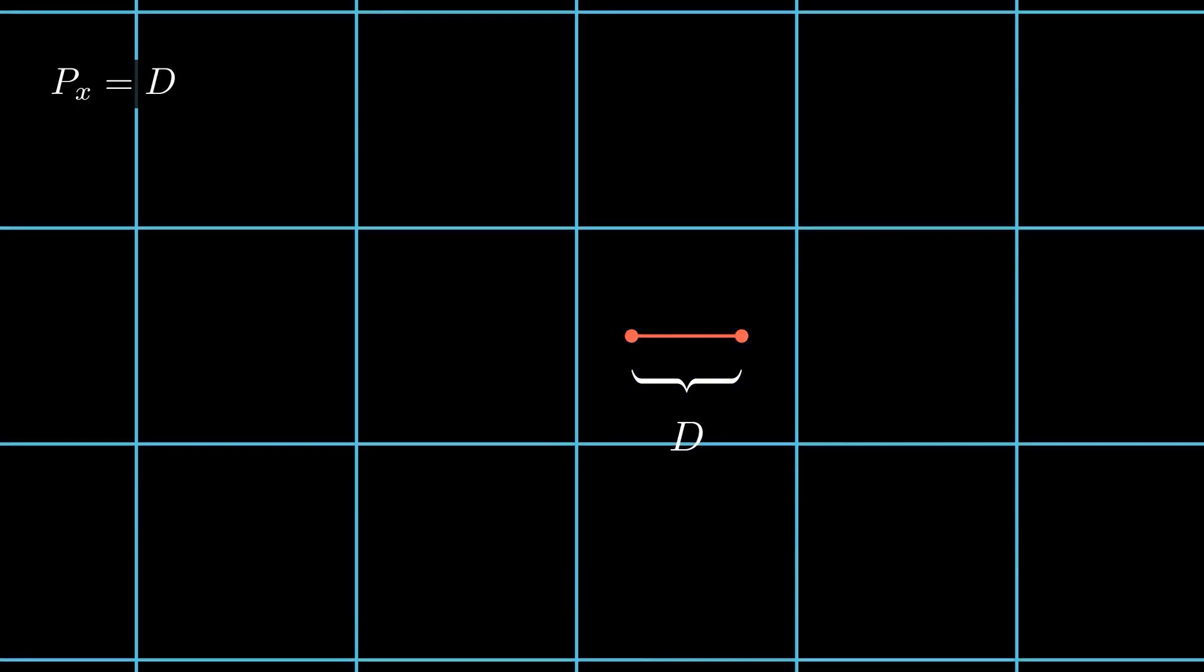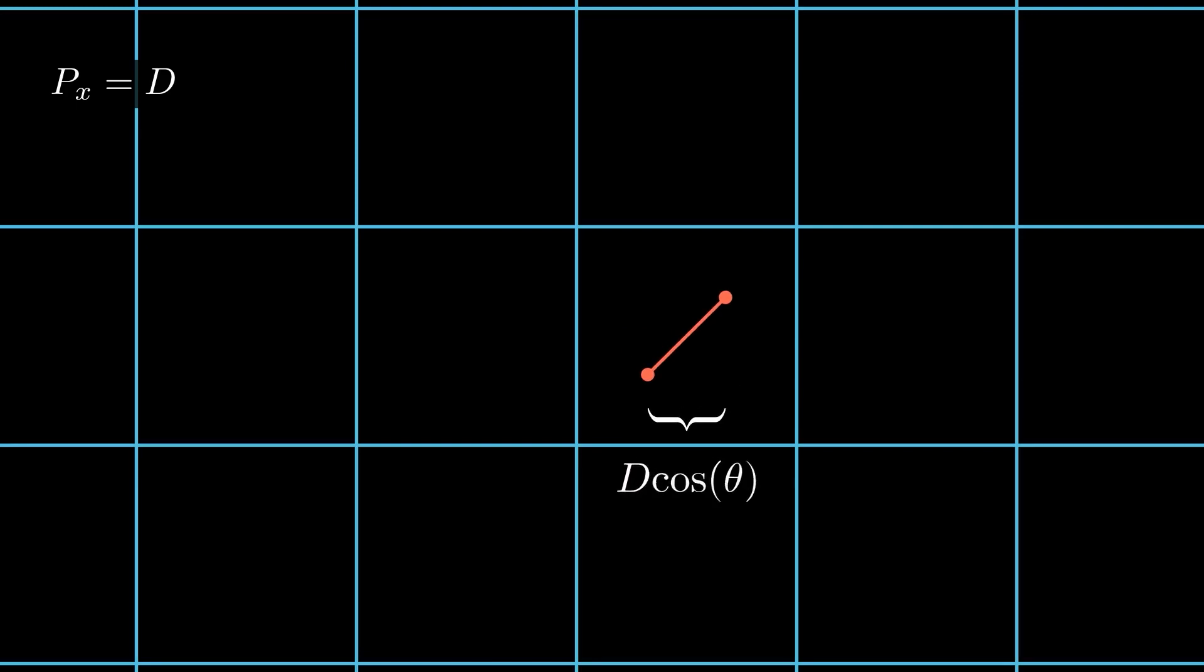If we add back in one dimension, the argument stays the same, except we now need to take into account the orientation theta. Here, the probability that we only cross one vertical grid line is still given by the x-component of the segment, D cosine theta. Similarly, the probability that it crosses a horizontal grid line is given by the y-component of the segment, D sine theta.